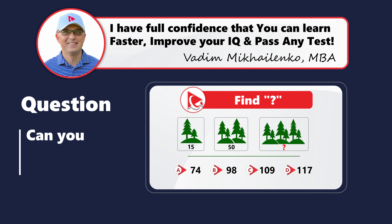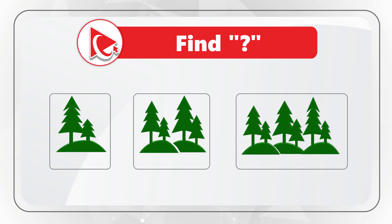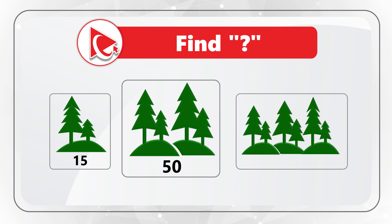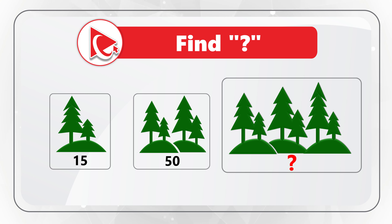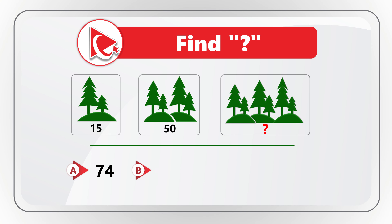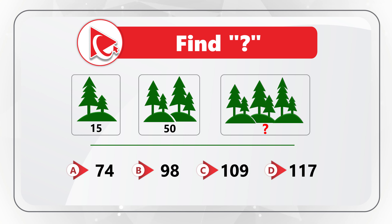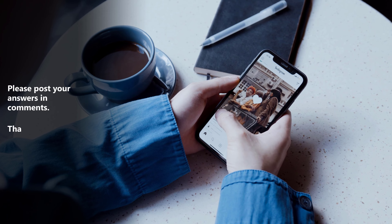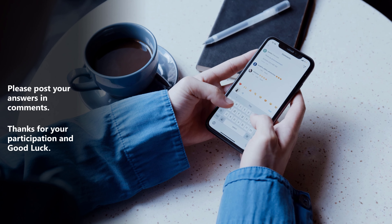Here is a surprise question for you — I am not going to share the answer. You're presented with three images, all with evergreen trees on berms. The first image has the number 15, the second has 50, and the third has a missing number. Calculate and select the missing number from: A is 74, B is 98, C is 109, D is 117. Pause this video for 10 to 15 seconds to see if you can calculate the solution. Once you're ready, share your answer in comments so I can give you feedback. Thanks for participating and good luck!